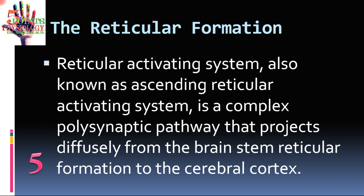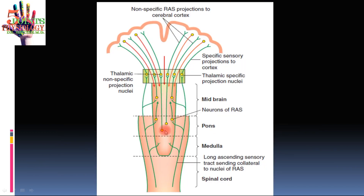The fifth and last point: there is something called the Reticular Activating System (RAS), also called the Ascending Reticular Activating System — a complex polysynaptic pathway that projects diffusely from the brain stem reticular formation to the cerebral cortex. This pathway synapses in the non-specific nuclei of the thalamus and then projects to the cortex. By virtue of this system, the reticular formation performs the functions of consciousness, wakefulness, and alertness, and influences EEG patterns in the brain.